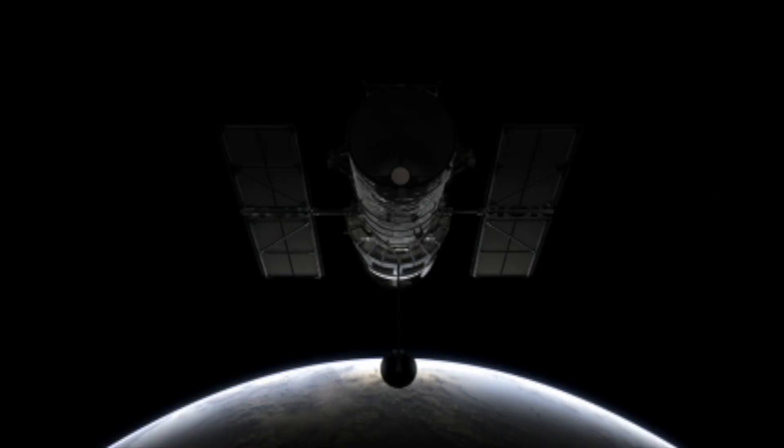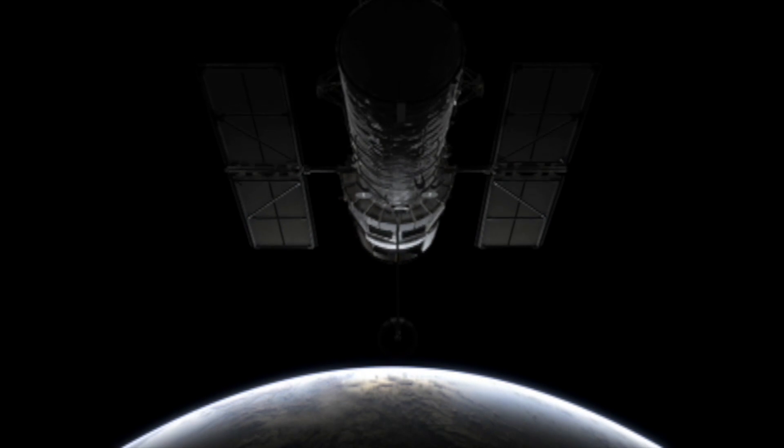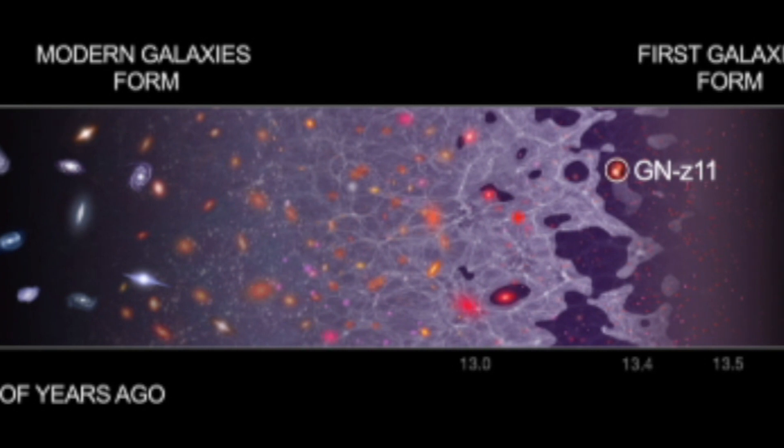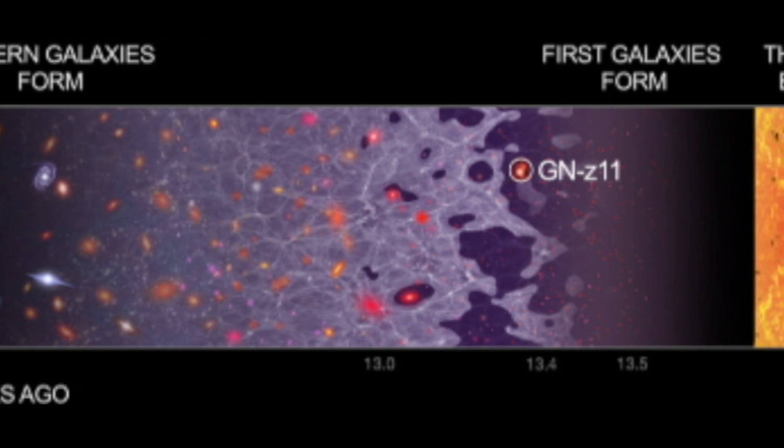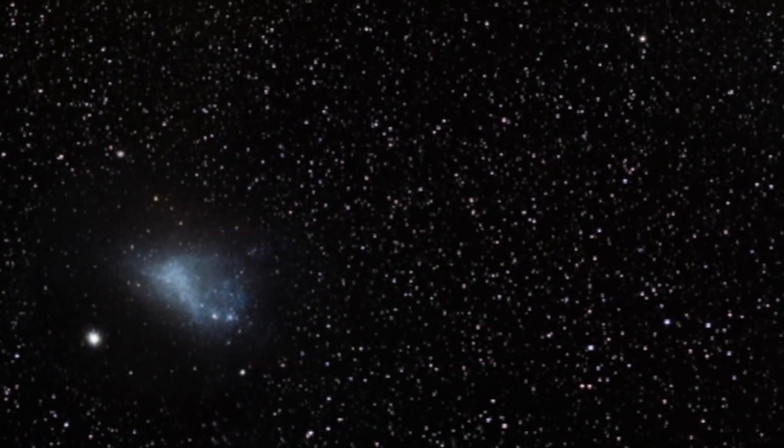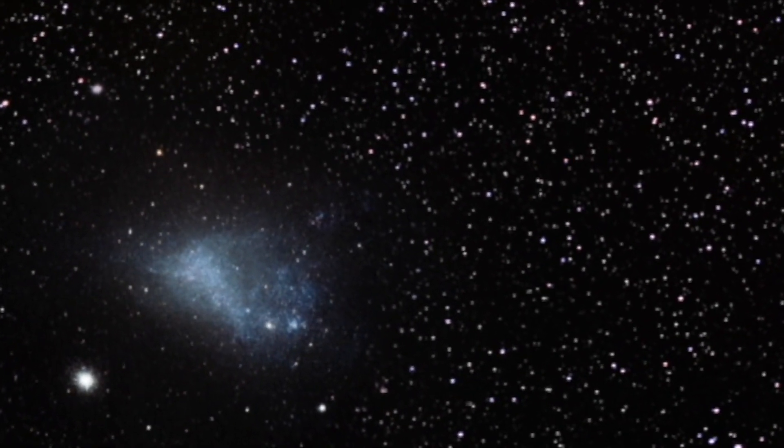With Hubble, galaxies have been observed back to times about 400 million years after the Big Bang. While most of these early galaxies are smaller and more irregular than those of today, some early galaxies are very similar to those seen nearby. And astronomers want to learn why.